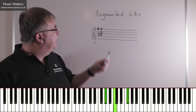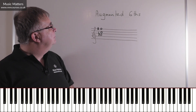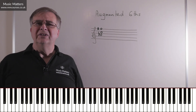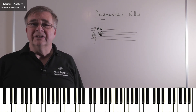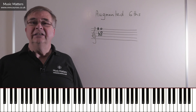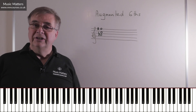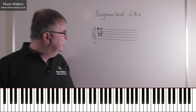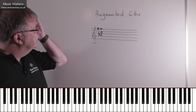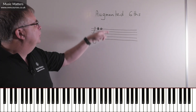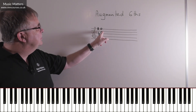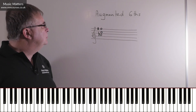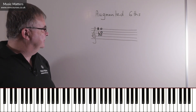Now that's the generic augmented sixth, but it comes in three different forms: the Italian sixth, the French sixth, and the German sixth. If you've got the basic augmented sixth chord — maybe with the tonic doubled up — that would be an Italian sixth.